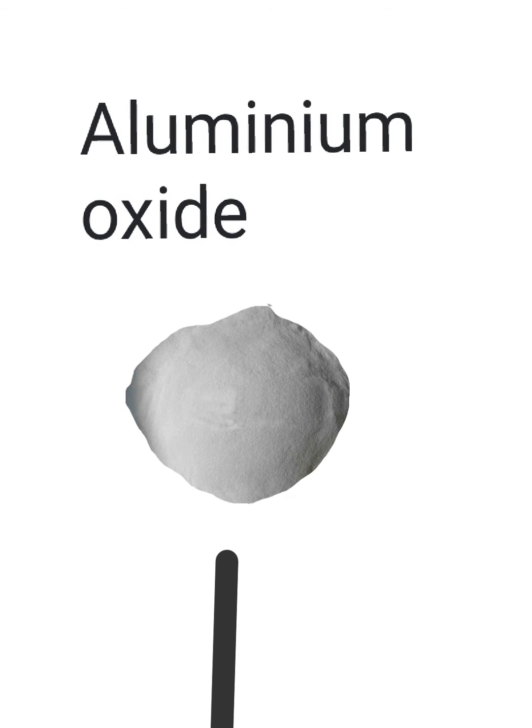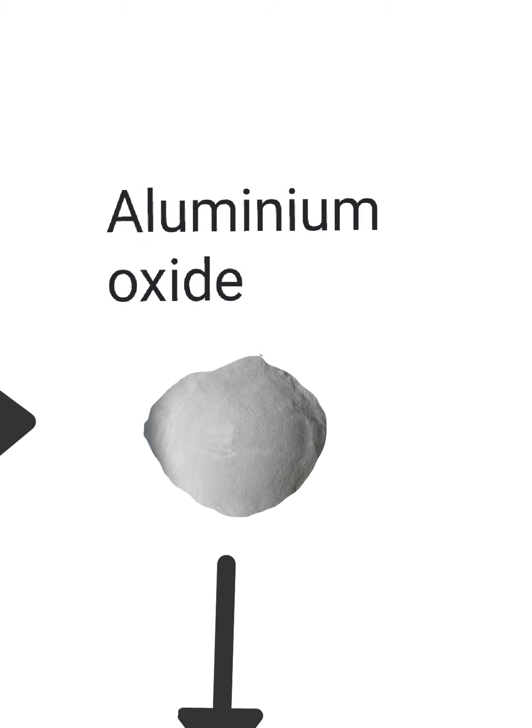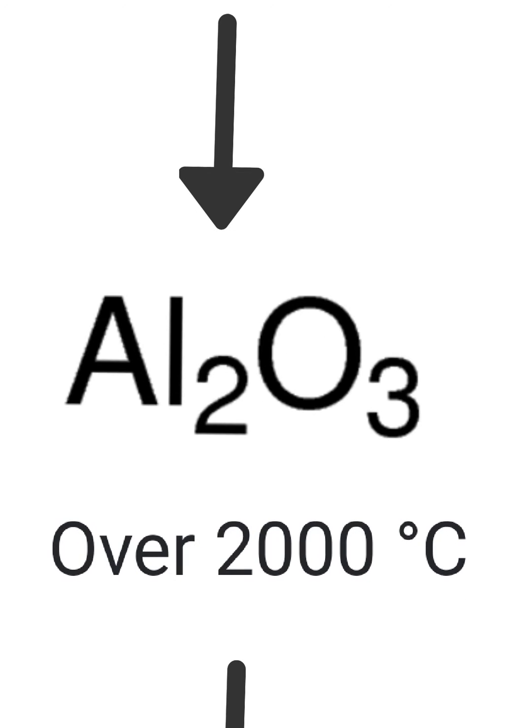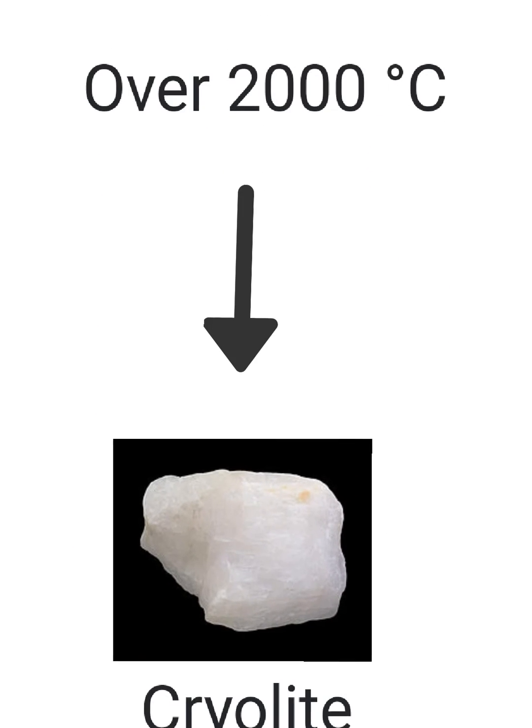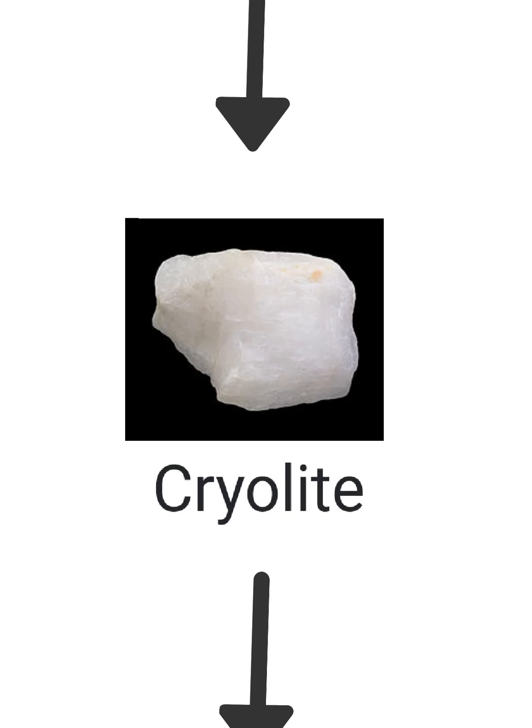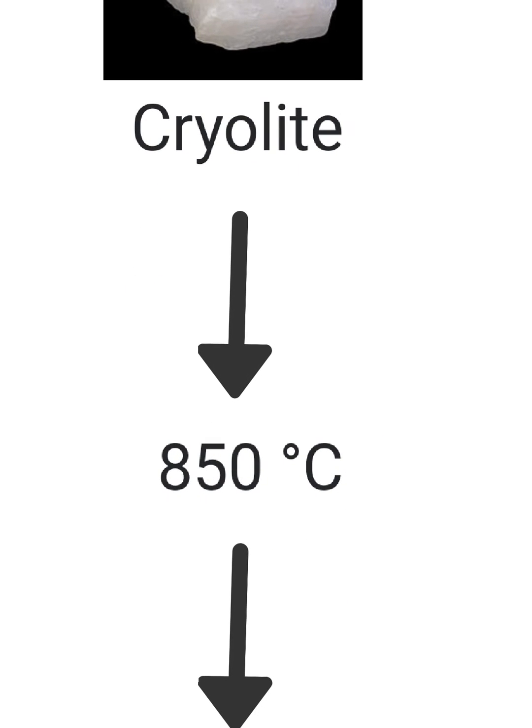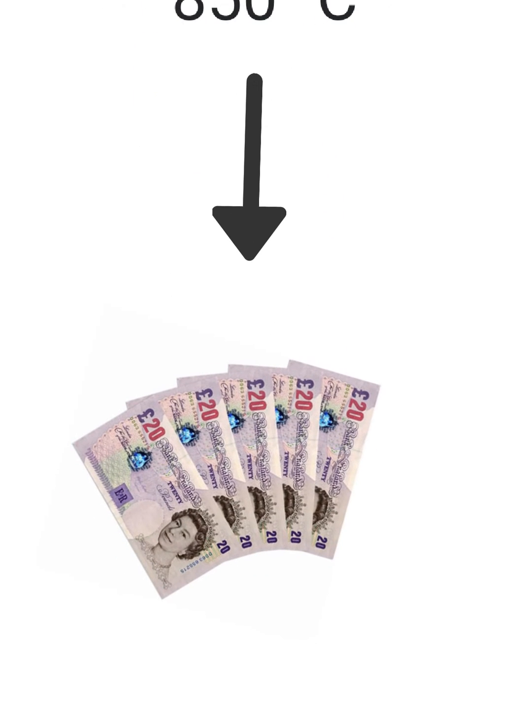In order to electrolyse this you have to first melt it. Now melting it isn't really straightforward because the melting point is about 2000 degrees Celsius. That's going to require a lot of energy and cost a lot of money. So to overcome this we add a substance called molten cryolite and this lowers the melting point to about 850 degrees Celsius. This means we now have to use less energy and it makes the whole process more economical.